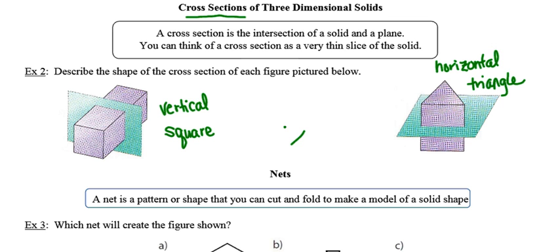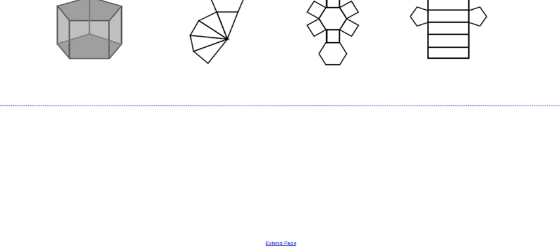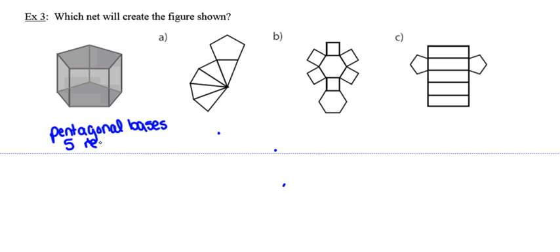The last thing we need to look at is a net. A net is a two-dimensional figure that we can fold up to make a solid, or you might think of a net as what happens when we take the solid and flatten it out. In this example, they want to know which net will create the figure shown. Looking at our solid, it has pentagonal bases, so it's a pentagonal prism, and it has five rectangular faces. I need to find the net that has two pentagonal bases and five rectangular faces.